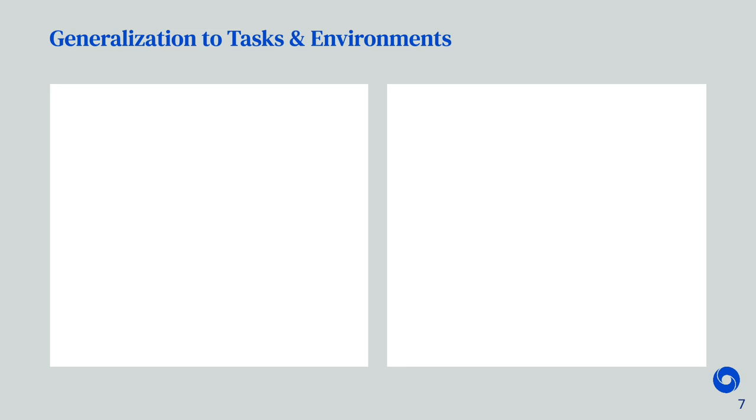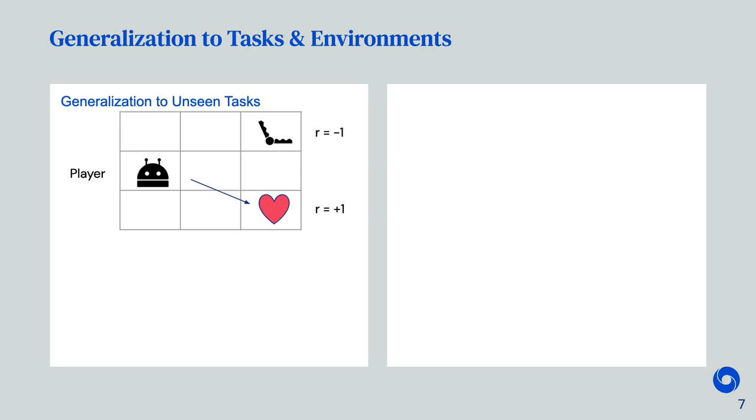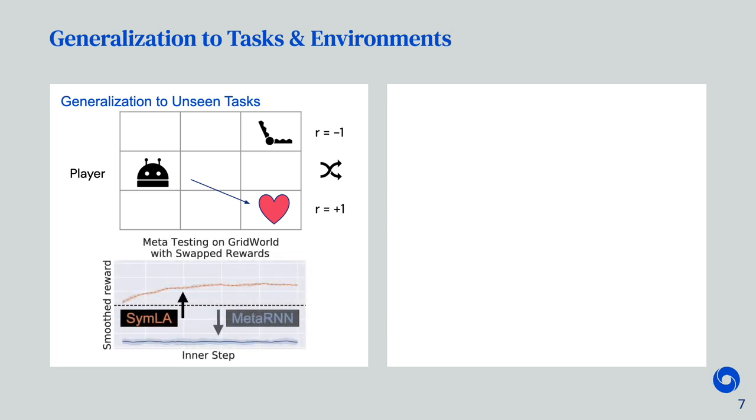SymLA also generalizes to unseen tasks. We meta-train on environments where a player has to collect rewards while avoiding traps. We then switch the rewards at meta-test time, making traps desirable and hearts to avoid. We observe that SymLA still increases its reward intake, while the meta-RNN has overfit to always collecting hearts. SymLA learns at meta-test time about observations, actions and their rewards.